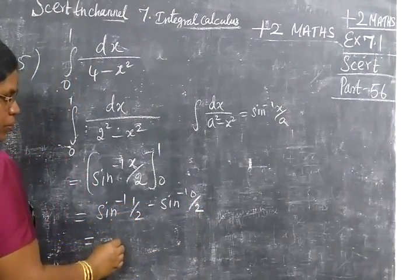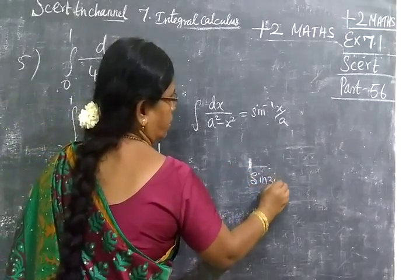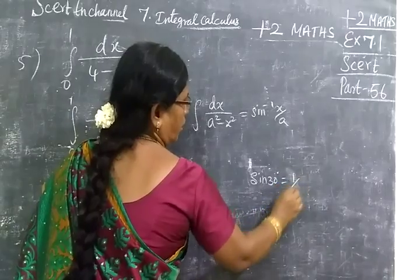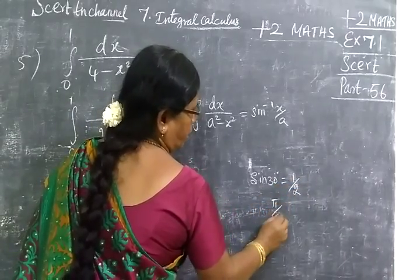Sin inverse 1 by 2, sin 30 degree, sin 30 degree equal to half. 30 degree can be written as π by 6.